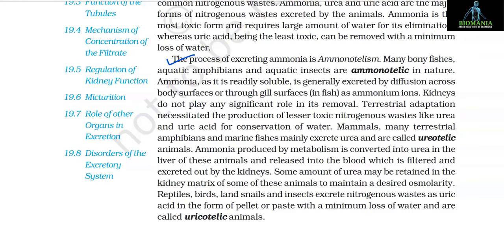Many bony fishes, aquatic amphibians, and aquatic insects are ammonotelic in nature. Ammonia, being soluble, is generally excreted by diffusion across body surfaces or through gill surfaces in fish as ammonium ions. Kidneys do not play any significant role in its removal. Terrestrial adaptation necessitated the production of lesser toxic nitrogenous waste like urea and uric acid for conservation of water.